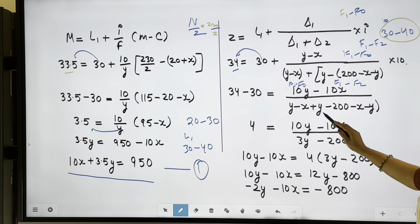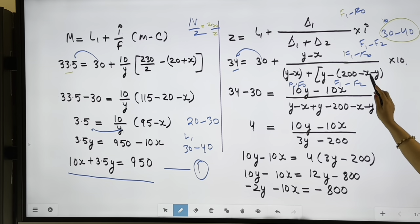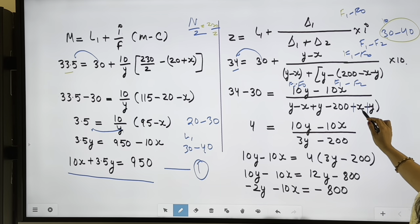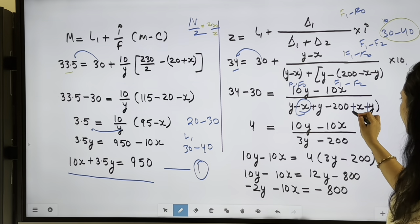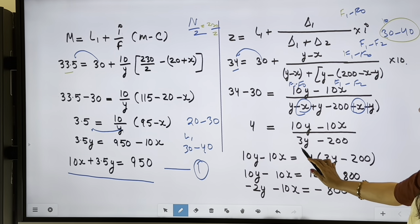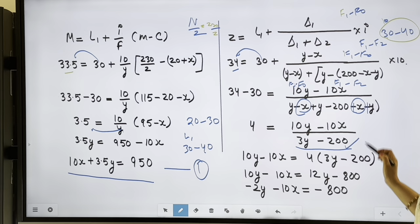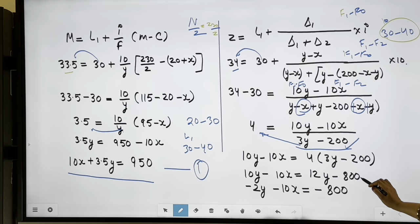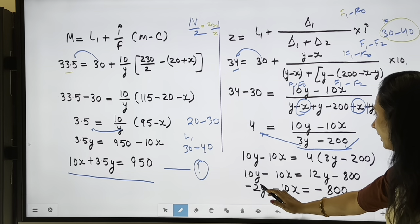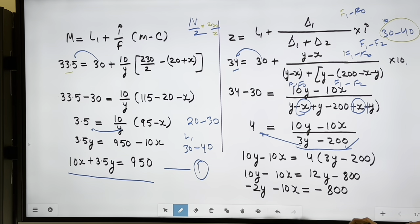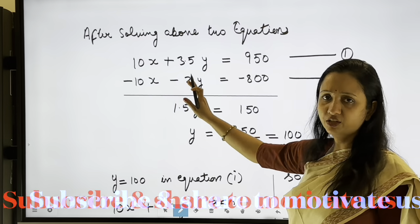Expanding the denominator: y minus x plus y minus 200 (the outside minus flips signs). X terms cancel. We get 3y minus 200 in the denominator. Multiplying across gives 12y minus 800. Rearranging: 10y minus 12y = −2y, and 10x minus 800. This is Equation 2.